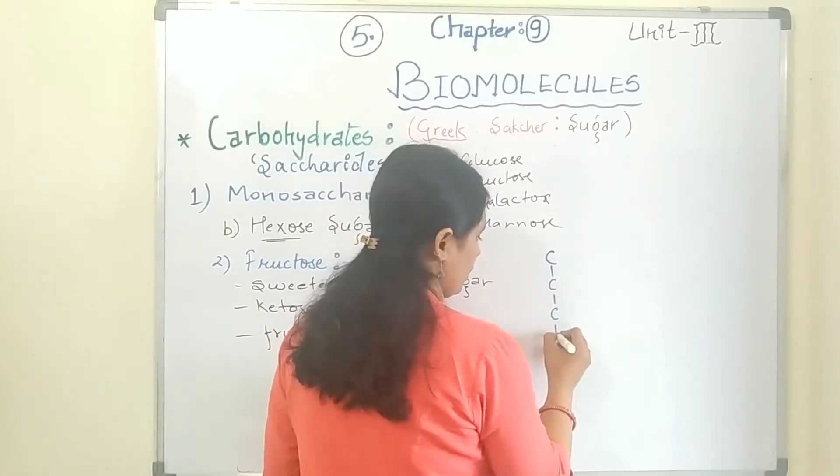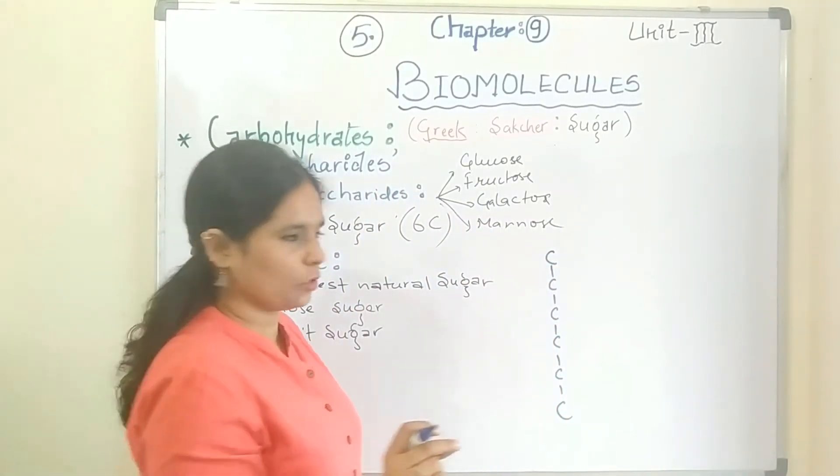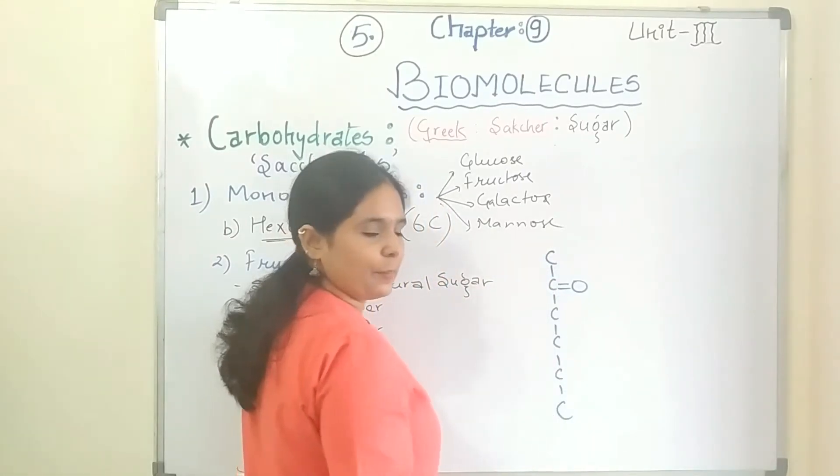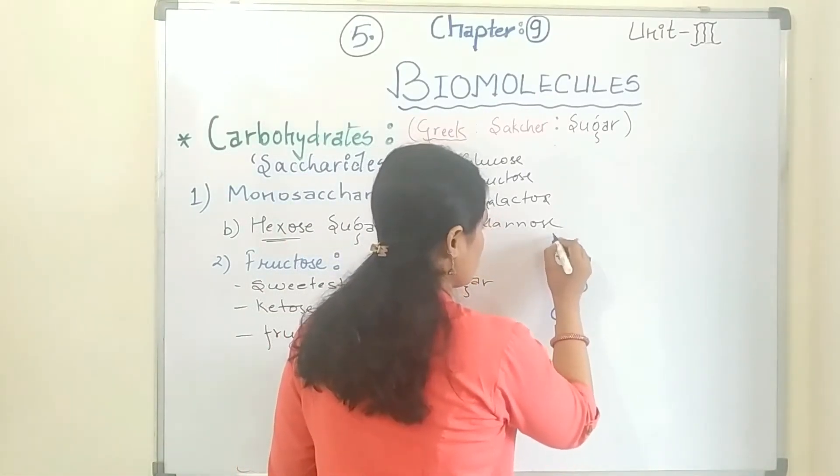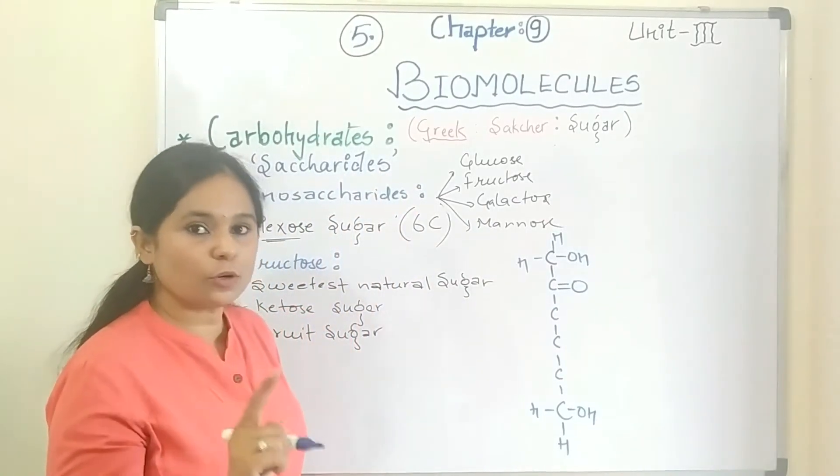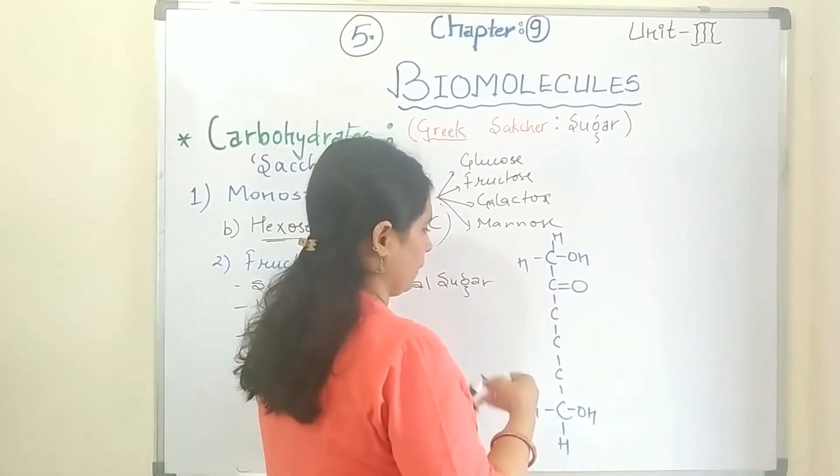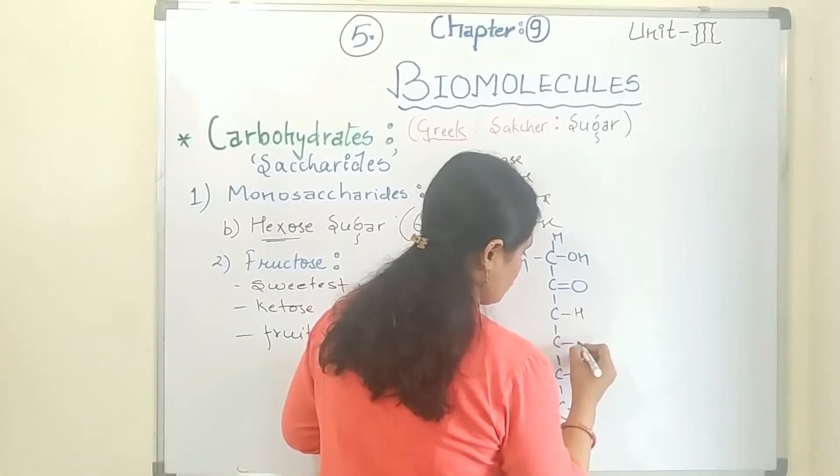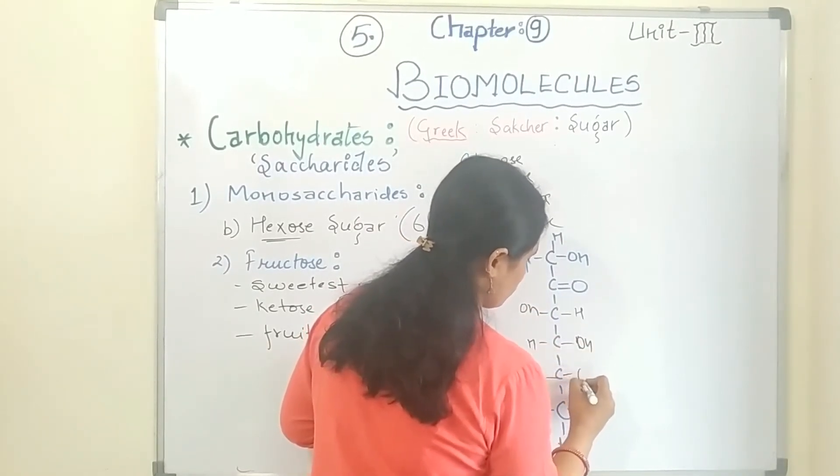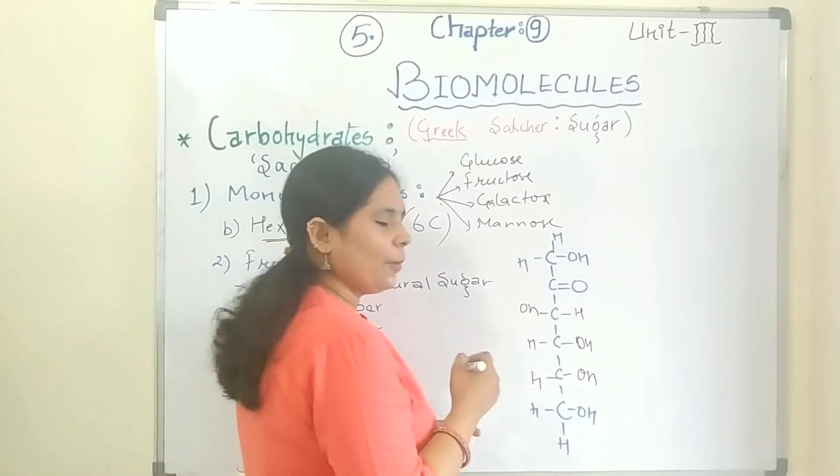Draw 1, 2, 3, 4, 5, 6 carbons. Whenever we are drawing ketose sugar, the second carbon has the ketone group and the first and last carbons will remain same: OH, H. Then OH, H positions as shown. This is the structure of fructose.